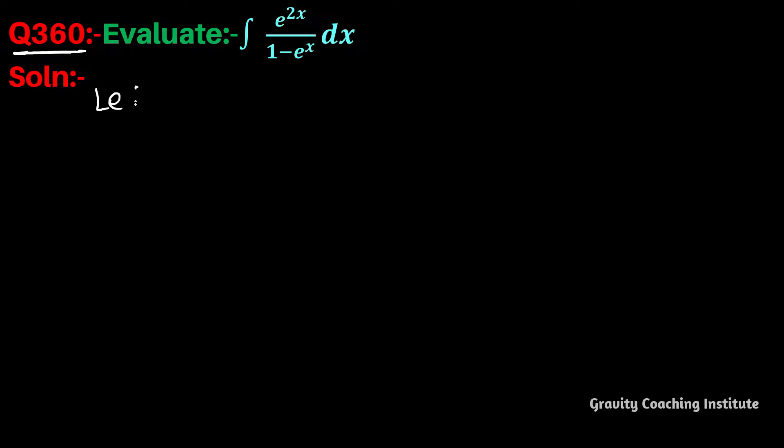First of all, let I equal to integration e to the power 2x by 1 minus e to the power x dx. This numerator e to the power 2x can be changed to e to the power x times e to the power x.